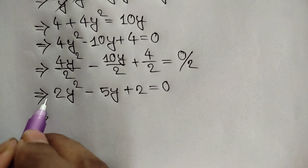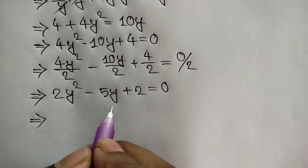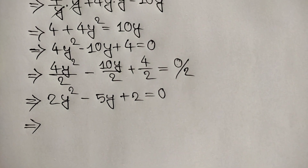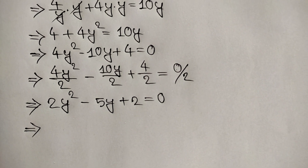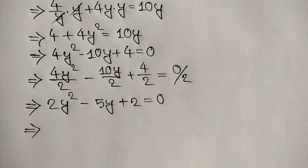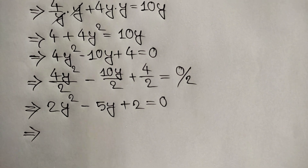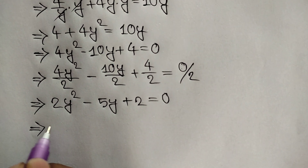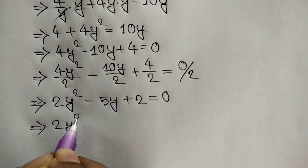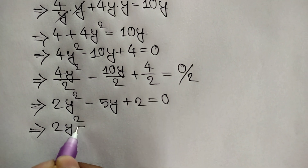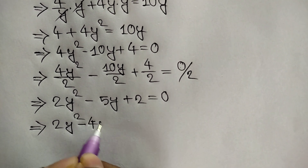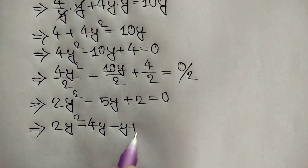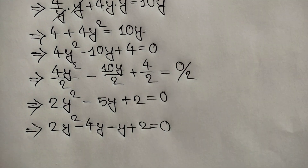Here we can apply the quadratic formula, or middle-term breaking factorization. We will apply middle-term breaking factorization. So we write 2y squared minus 4y minus y plus 2 is equal to 0.